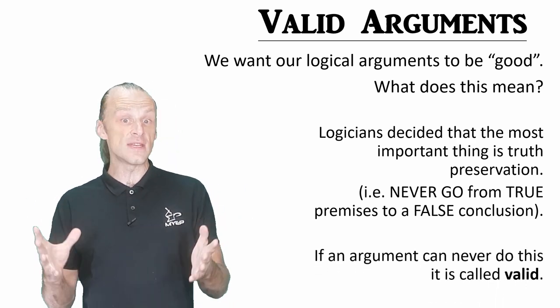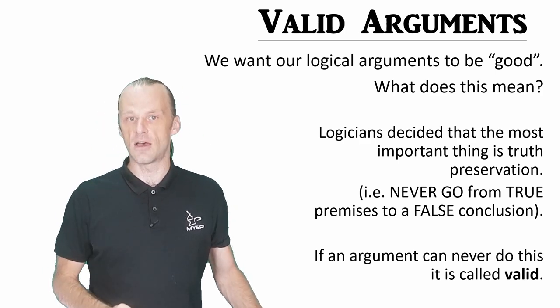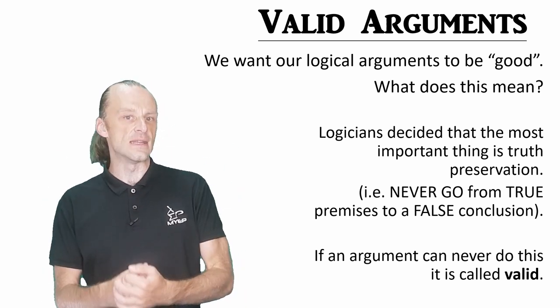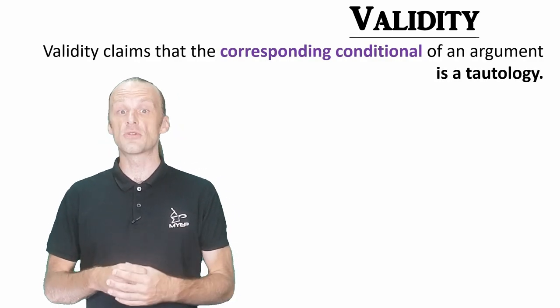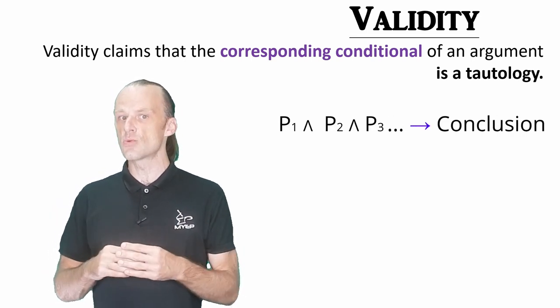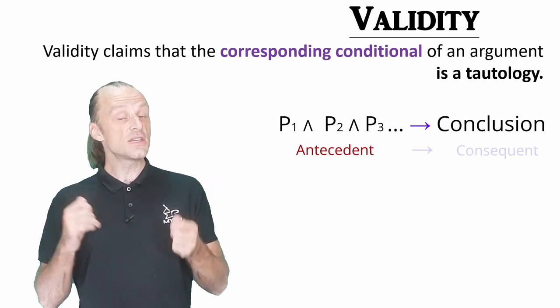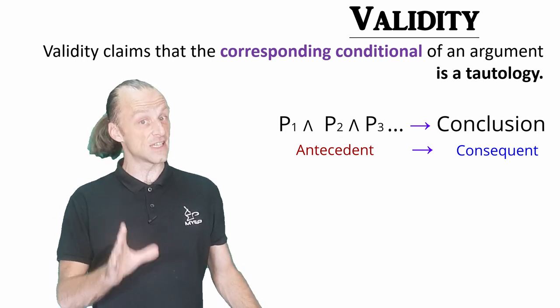If an argument is written so it can never give a false conclusion from true premises, we call that a valid argument. A valid argument is what we think of as a good argument in this way, because it preserves truth. How can we use our truth tables to see validity? We are actually going to use the corresponding conditional that we just spoke about above. We are going to put all the premises in conjunction with each other, that is the antecedent of the conditional, and then the conclusion is the consequent. An argument is valid if the corresponding conditional is a tautology.